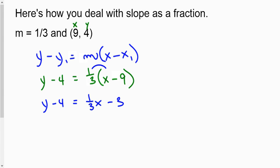But you handle it doing the exact same thing. And you still multiply all the terms that are inside that parentheses by 1 third. So the distribution is done. We've got rid of the parentheses.